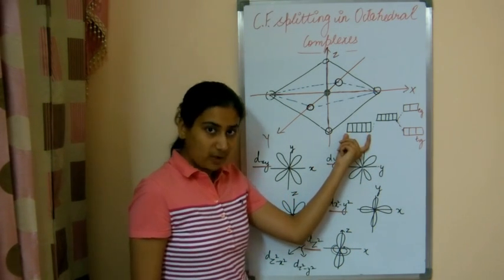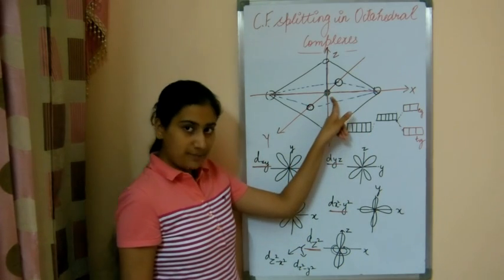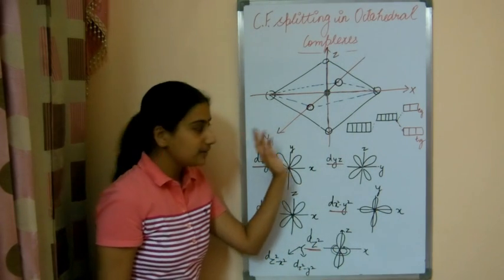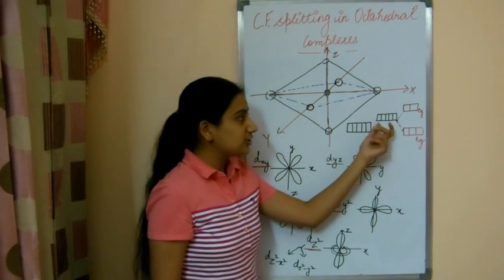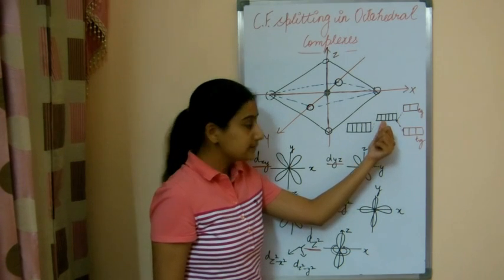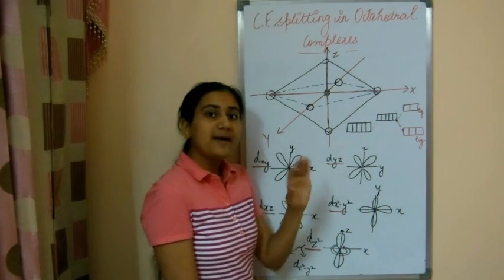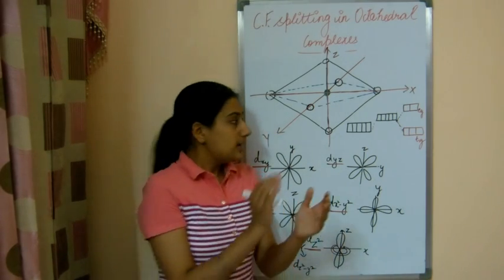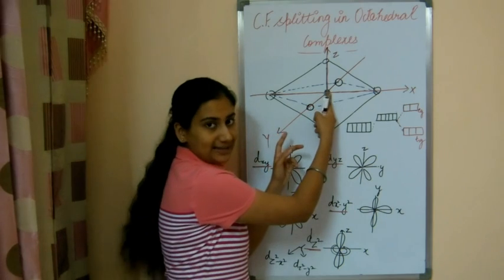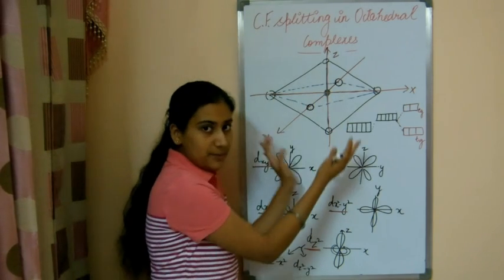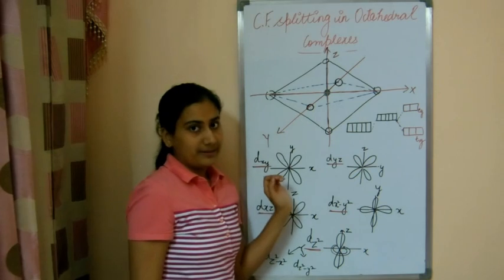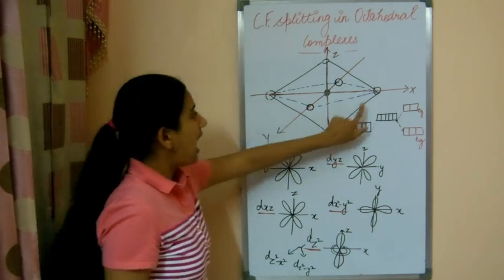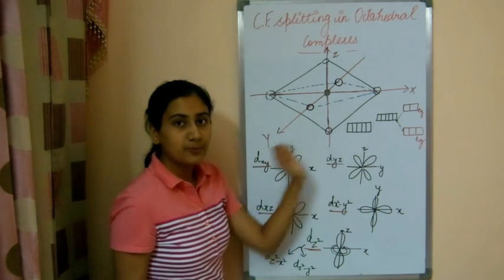This is the representation of d orbitals of the transition metal atom in ground state when not surrounded by any field, and this is the representation when surrounded by a symmetric field. Moving to coordinate compounds: the metal atom is surrounded by a field, but it is not symmetric, because in octahedral geometry these ligands are present in specific positions.